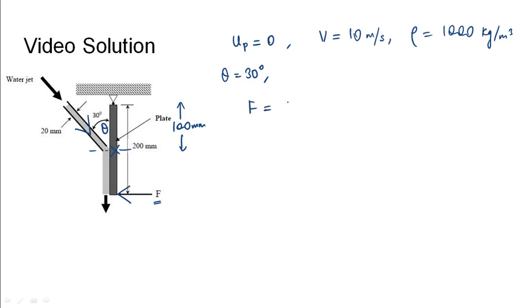The force due to the fluid flow would be ρAV² since it is a similar case to what we saw before and the plate has been fixed. Density is 1000, diameter of the fluid flow is 20 millimeters. Substituting the value, area would be π/4 into diameter that is 0.02 in meters squared into the velocity squared that is 10 squared.